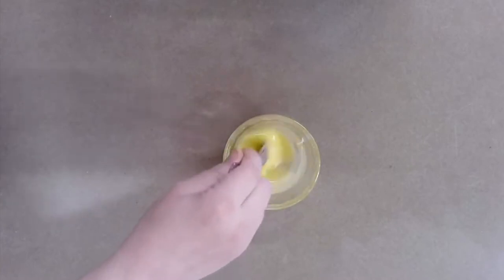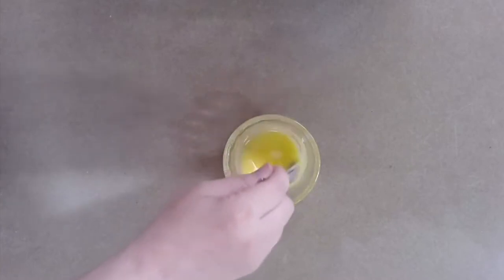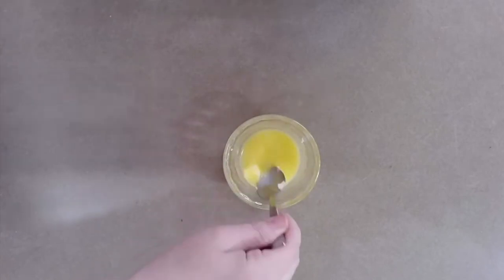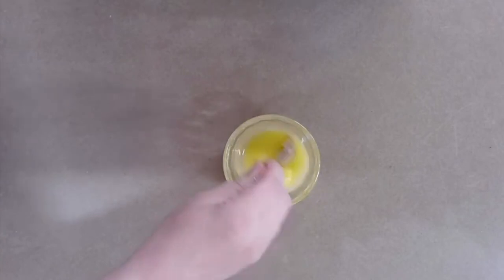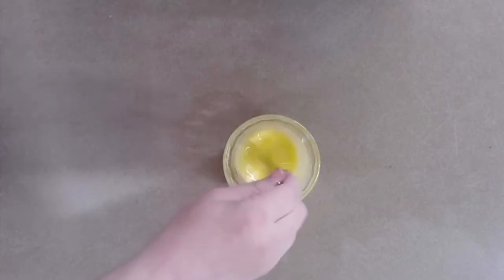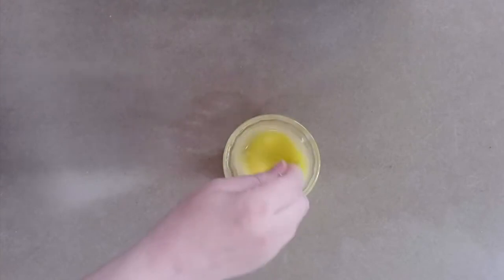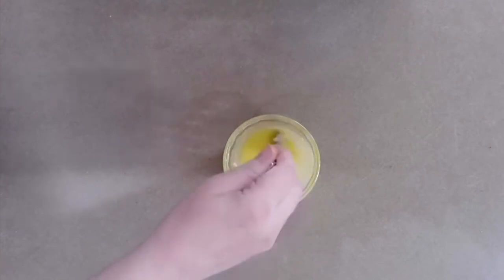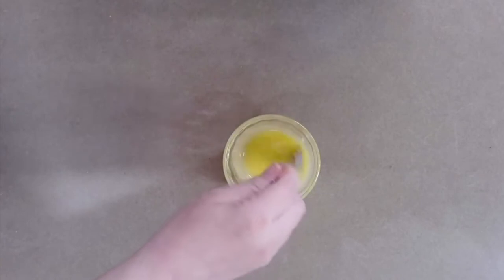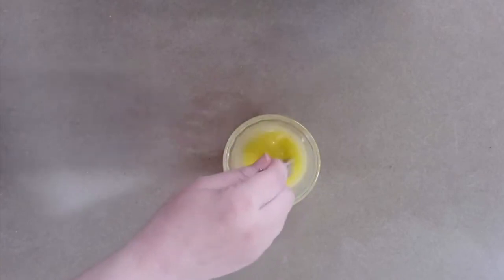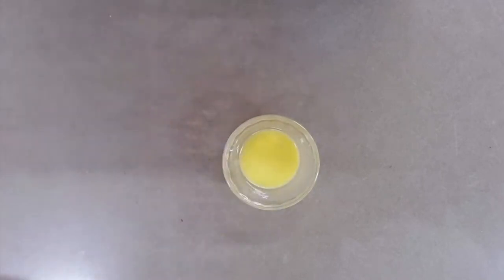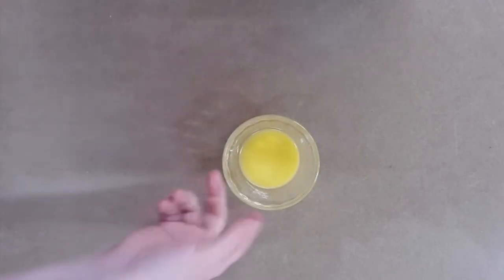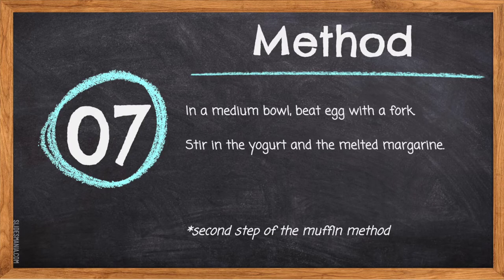When done microwaving, most of the margarine will be melted but there may be a little bit remaining — just stir it in quickly and it will slowly melt. Make sure you cool this margarine before adding it to your liquid ingredients. If added too early, it might accidentally cook the egg before it goes into the muffin, which we want to avoid.